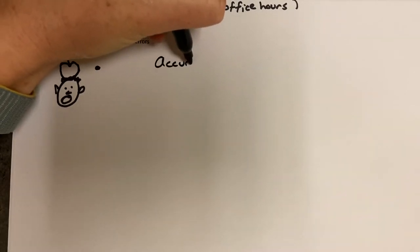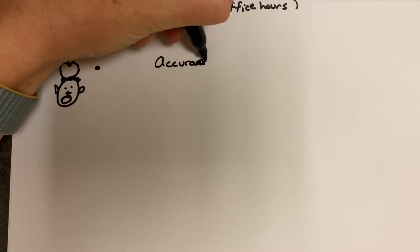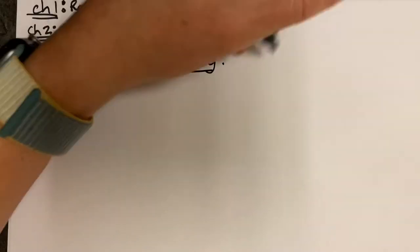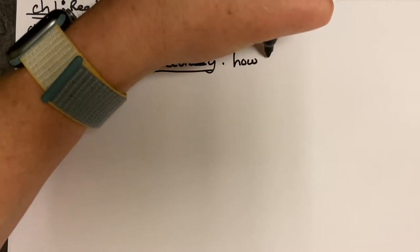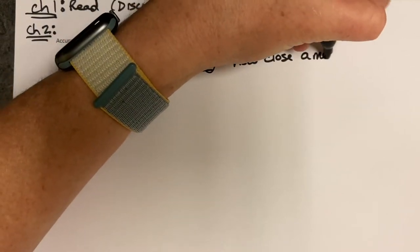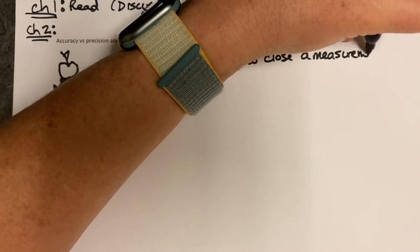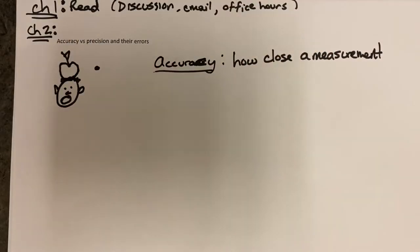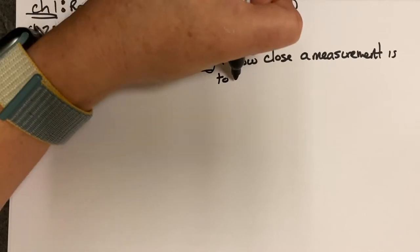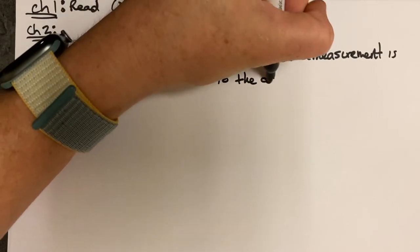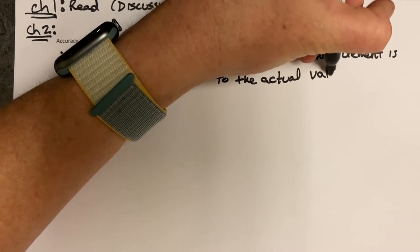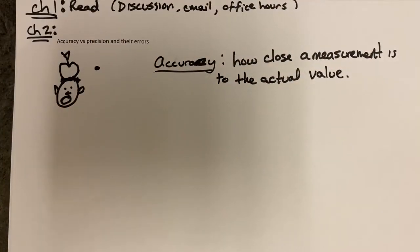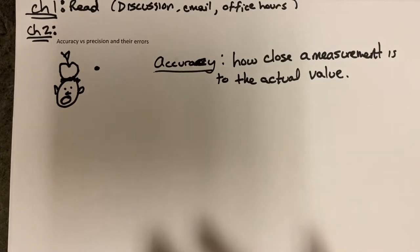Accuracy refers to how close a measurement — or in this case, a shooting of an arrow — is to the actual value. In other words, if you stand on a scale and you're 175 pounds, and the scale says 175 pounds, that is an accurate scale. Not to be confused with precision, which is actually quite different.